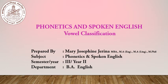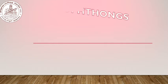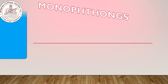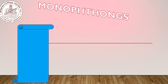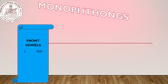Phonetics and Spoken English. In this video, let us see about vowel classification. We have already seen that totally 44 phonemes are there, and out of that, 20 sounds are vowel sounds. Of those, pure vowel sounds or monophthongs are 12, and the remaining 8 are diphthong sounds. So in this video, let us see about monophthongs.